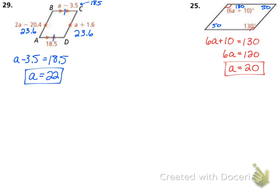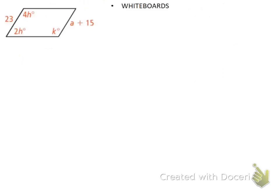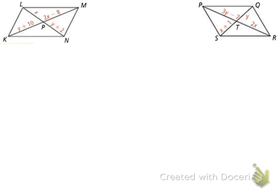The last two problems are a little more difficult — they require remembering some Algebra 1. The diagonals of a parallelogram bisect each other, so these two segments are equal and those two are equal. That gives us two equations: x equals y plus 2, and y plus 10 equals 2x minus 8. We have two variables, so we need to use substitution — systems of equations like you did last year. We want a variable by itself; here x is already isolated, so put the other side in parentheses.